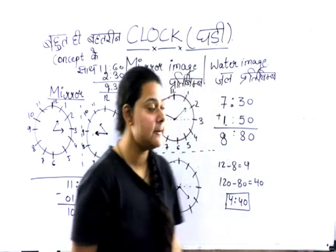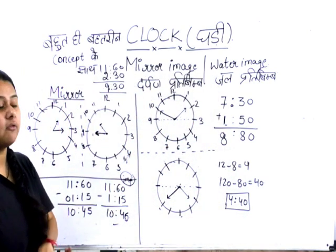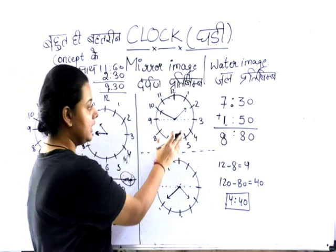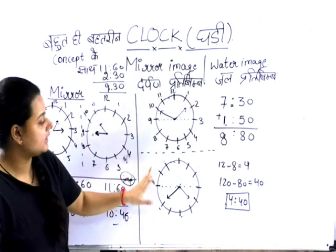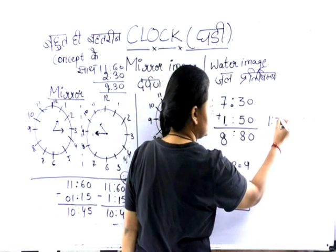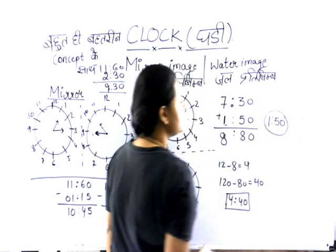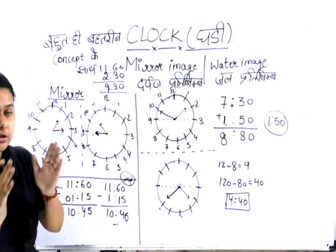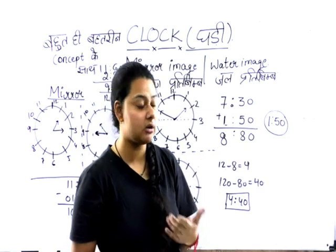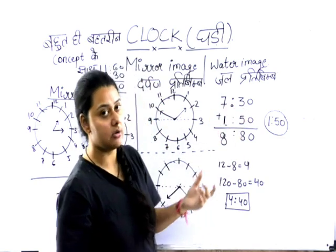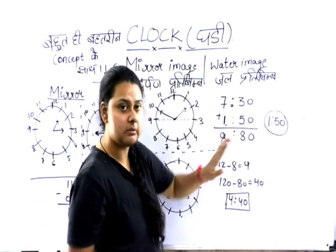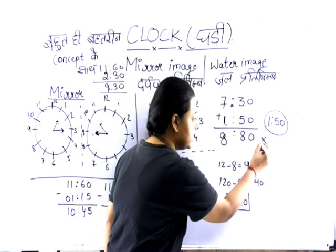Now let's talk about the water image. For the water image concept, take 1:50 minutes as an example. We will understand the concept and questions. When you have a water image concept, what do we do? We will add 7:30 to the given time. At 7:30 minutes — how much is it? 8 hours and 80 minutes. But this is not the final answer.